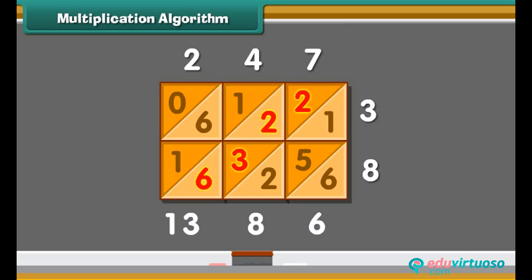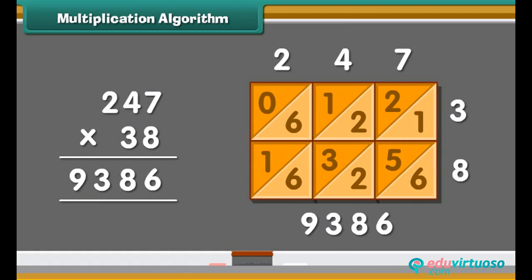We get a 2 digit answer, so we just write 3 below and carry 1 in the next strip. 1 plus 6 plus 1 is 8. Add 1 carry to the answer. We get 9, and 0 is 0. We get the answer 0, 9, 3, 8, 6. Thus, we have the answer of 247 into 38 as 9, 3, 8, 6.